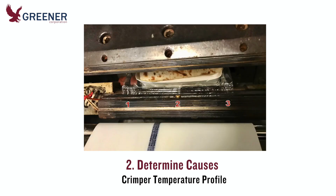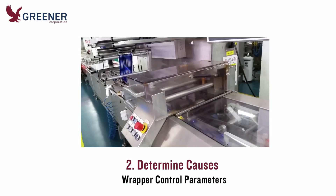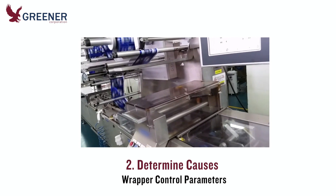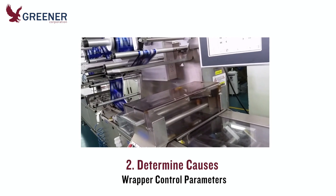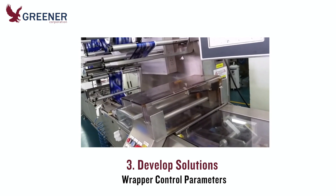Using a contact pyrometer, provide three temperature readings from the crimper sealing face — in the middle and on each side where the outer edge of the package contacts the face. Provide wrapper control settings, if available, for line speeds, dwell, package length, and for the temperature of the crimpers and fin wheels.